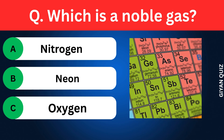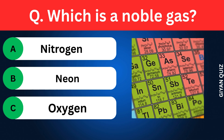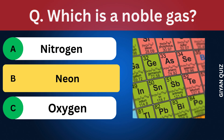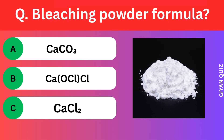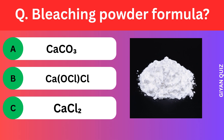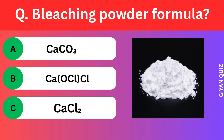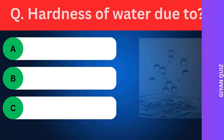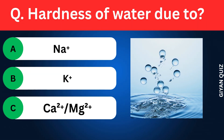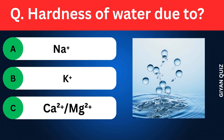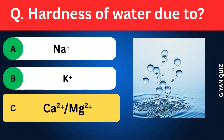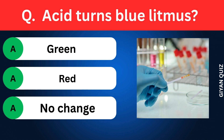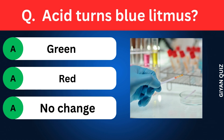LPG mainly contains? Options: Hydrogen, Propane or butane, Ethane. Correct answer: propane or butane. Which is a noble gas? Options: Nitrogen, Neon, Oxygen. Correct answer: neon. Bleaching powder formula? Options: Calcium carbonate, Calcium oxychloride or calcium hypochlorite, Calcium chloride. Correct answer: calcium oxychlorite or calcium hypochlorite.